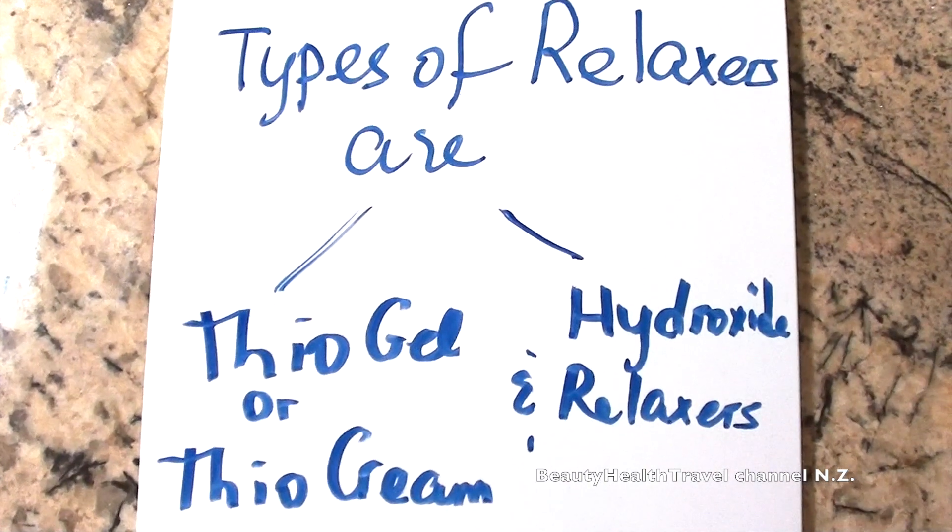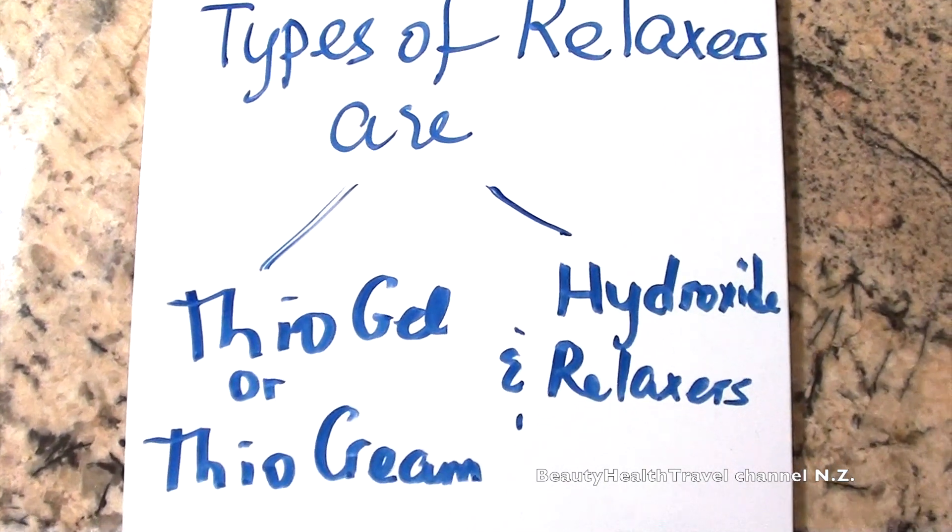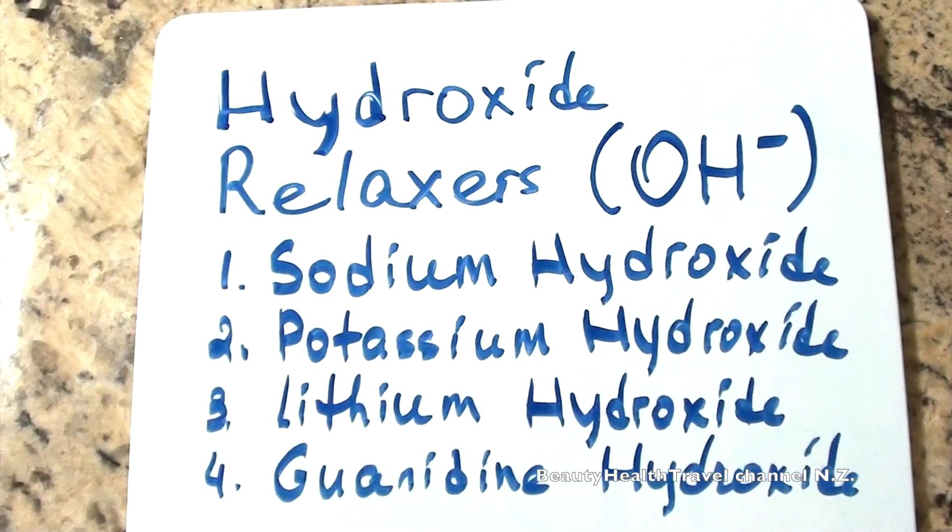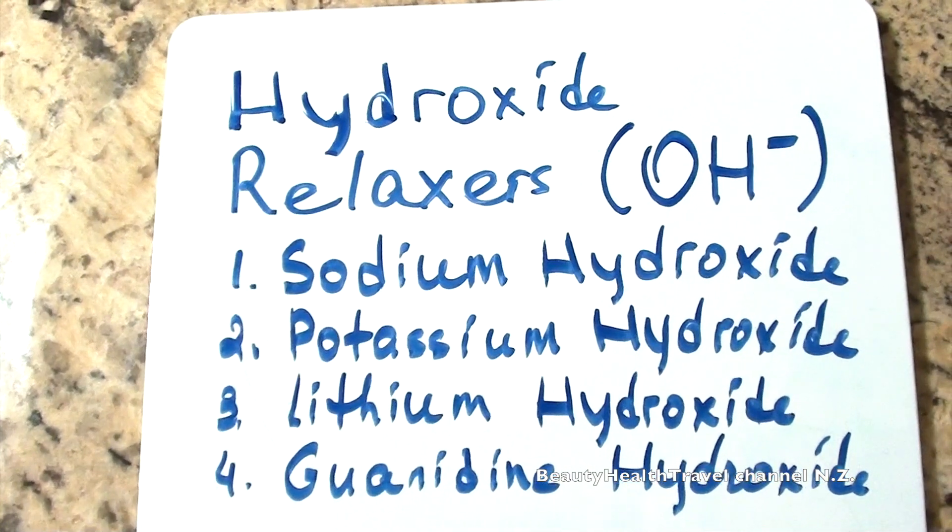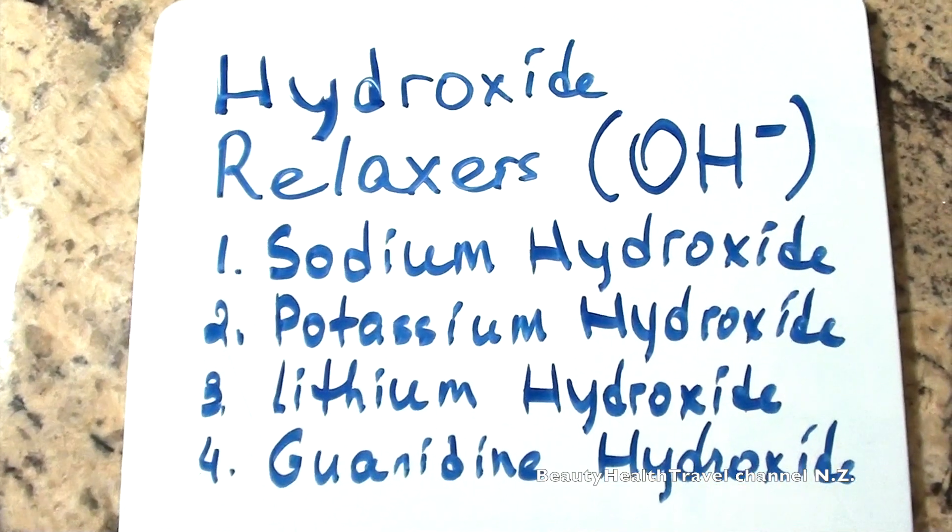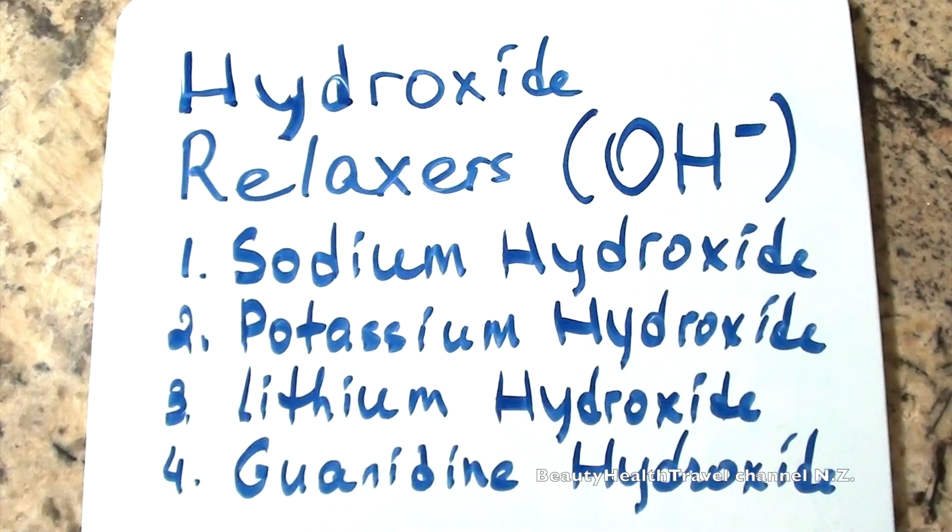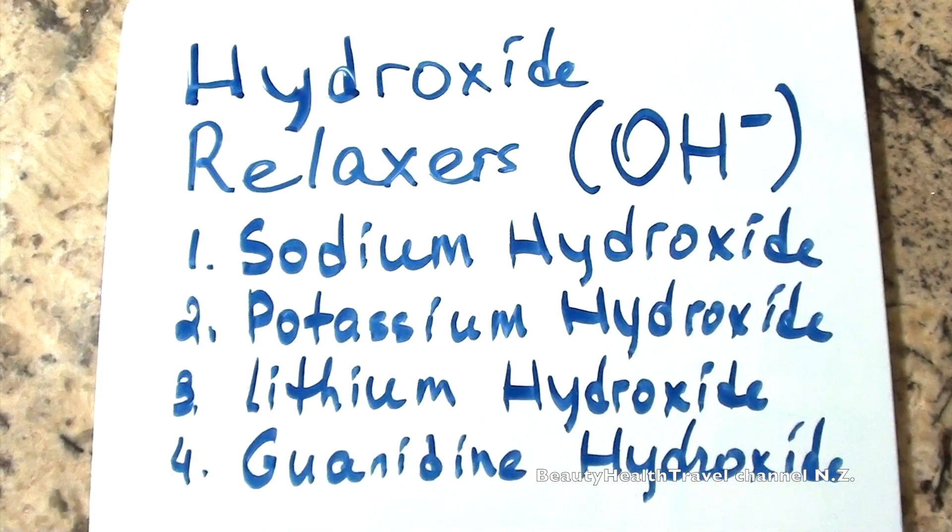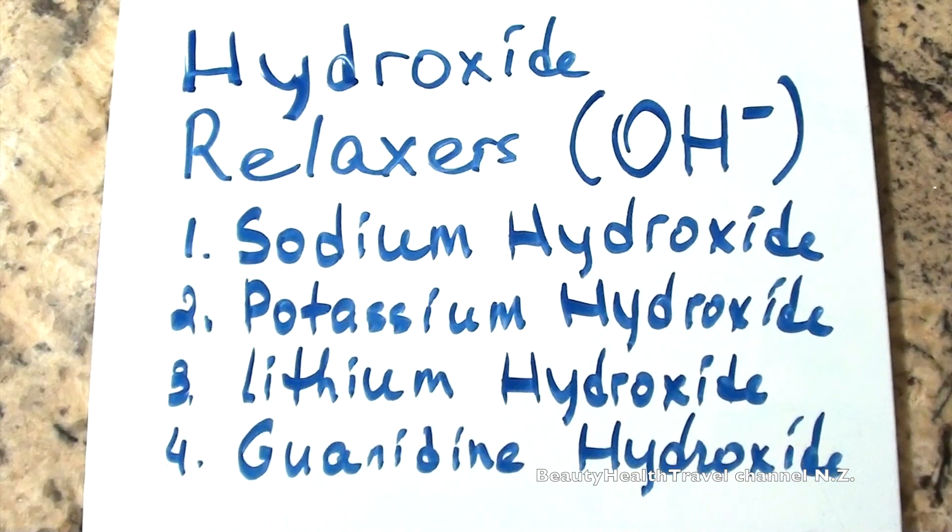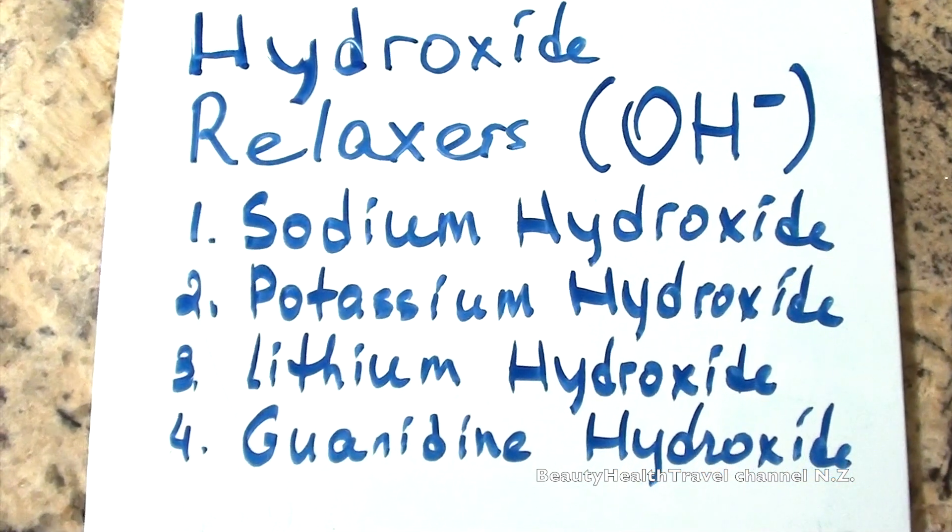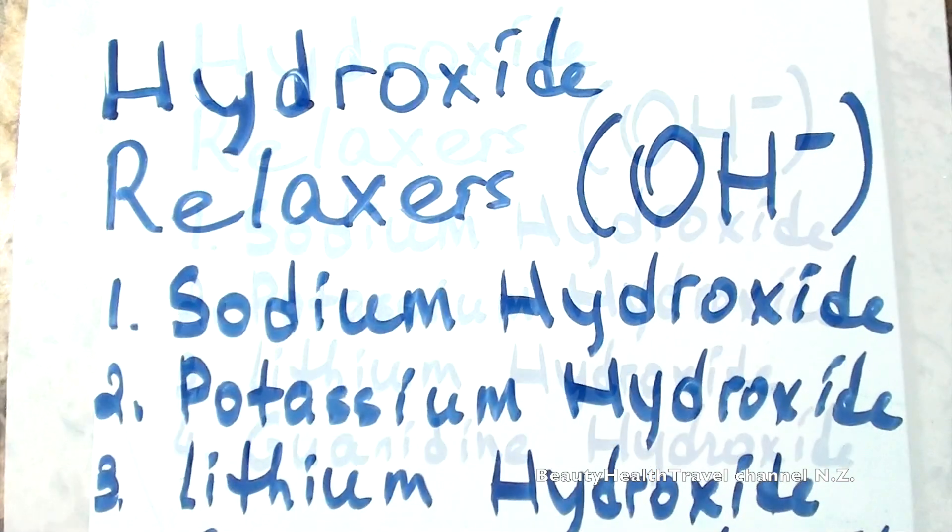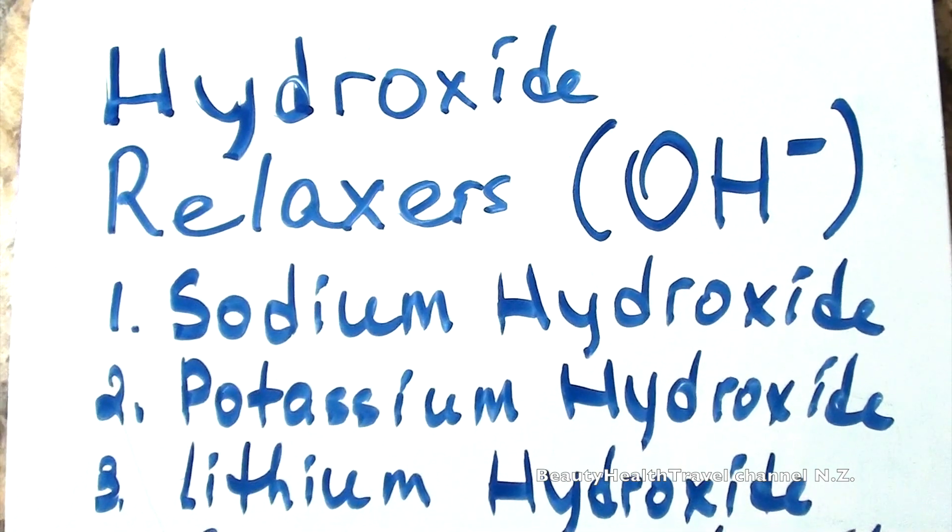Types of relaxers are diogel or diocreme and hydroxide relaxers. Hydroxide relaxers are made of hydroxide ion (OH-) as an active ingredient. The classification is: 1. Sodium hydroxide, 2. Potassium hydroxide, 3. Lithium hydroxide, and 4. Guanidine hydroxide. The first three are also called metal hydroxide relaxers.